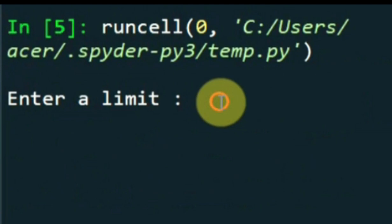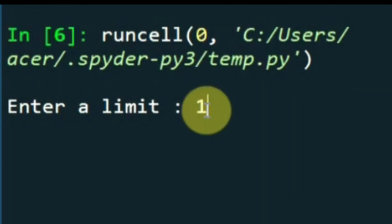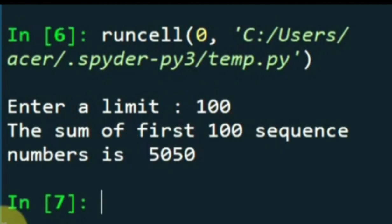If I enter 10, the sum of first 10 sequence number is 55. If I enter 100, the sum of 100 sequence number is 5050.